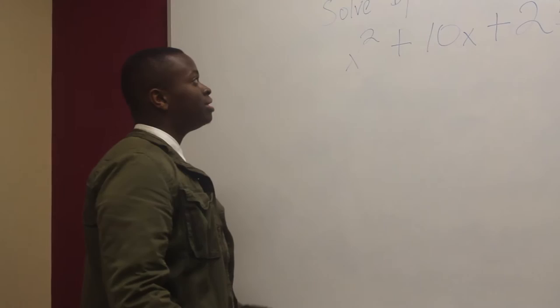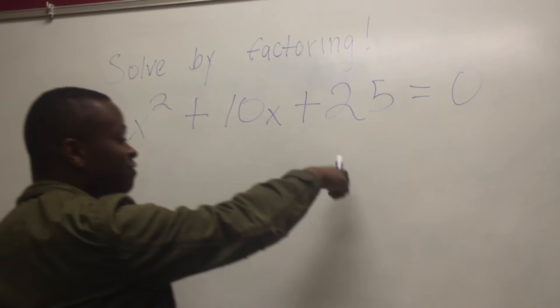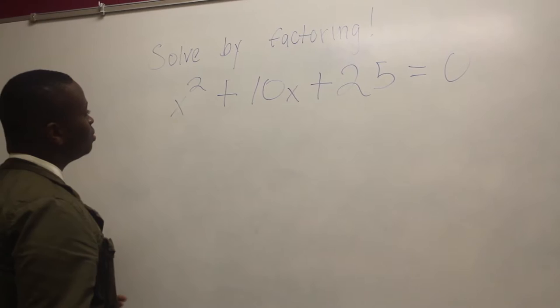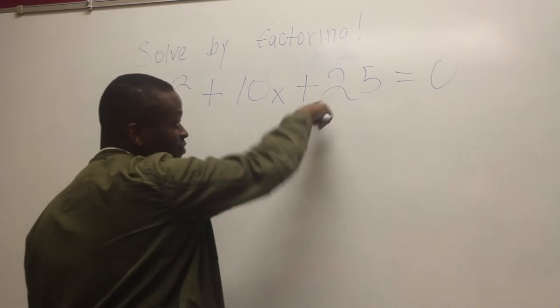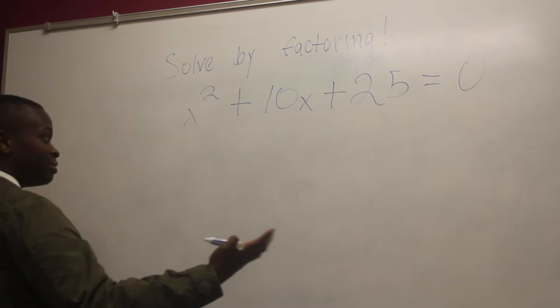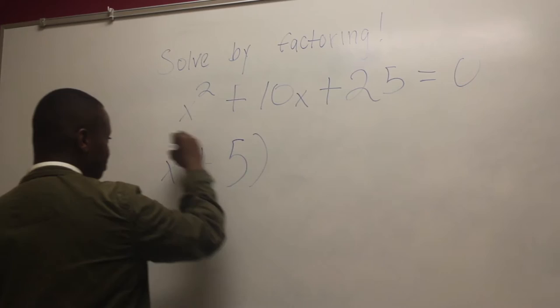Our last problem will also be solved by factoring. The problem is X squared plus 10X plus 25 equals zero. The first step is to simplify this equation into two separate polynomials. You look for two numbers that add together to give you 10 but multiply together to give you 25. Those two numbers are five, because five plus five is 10 and five times five is 25. So your two polynomials are X plus five and X plus five.